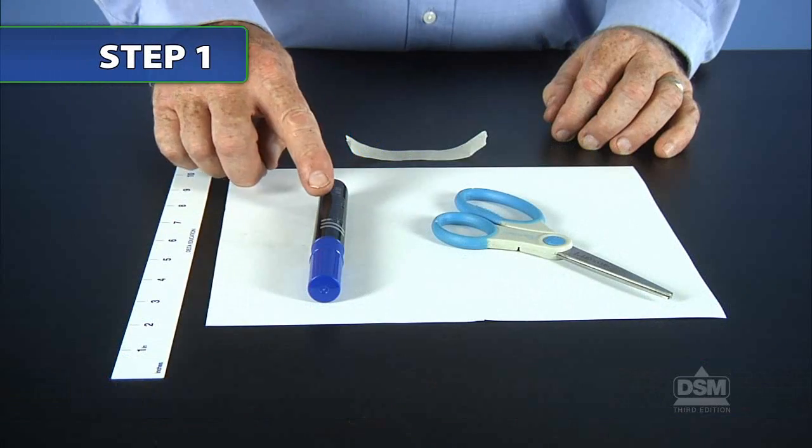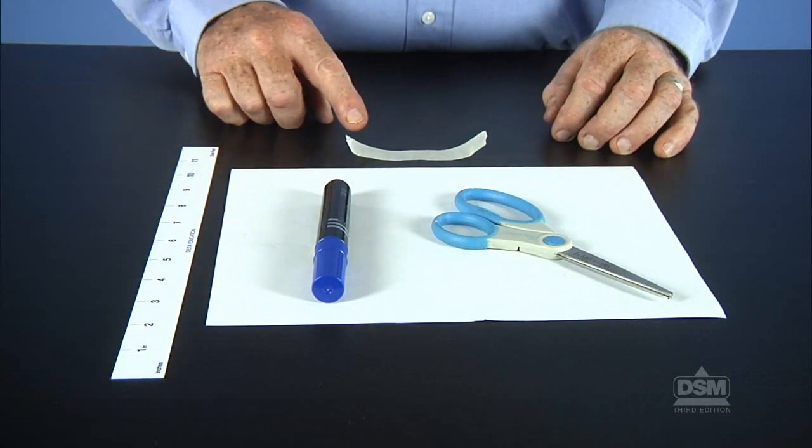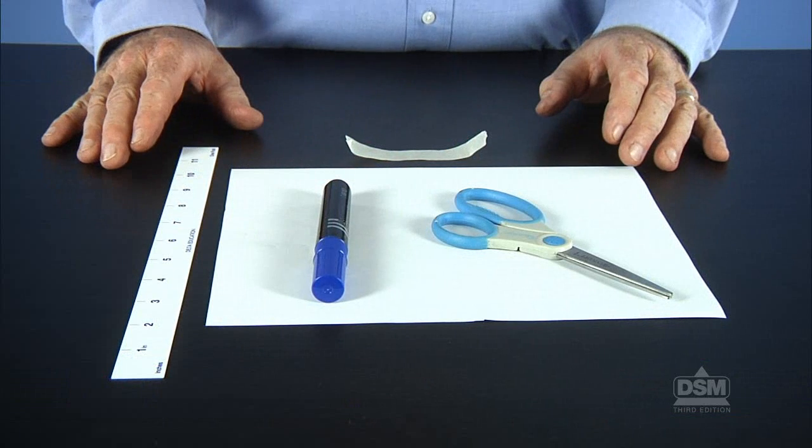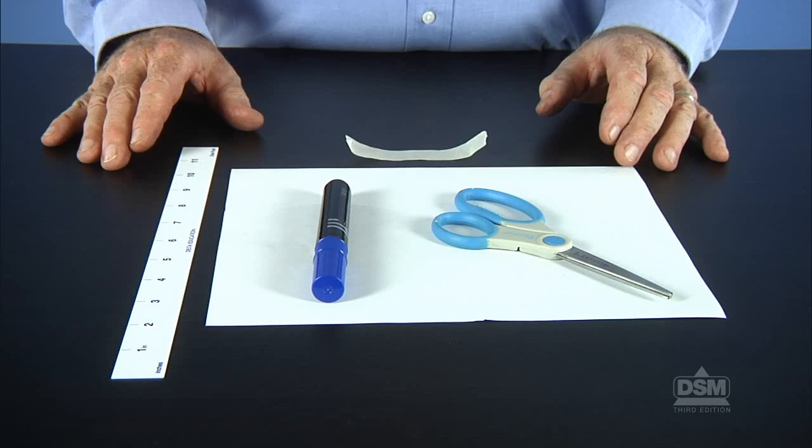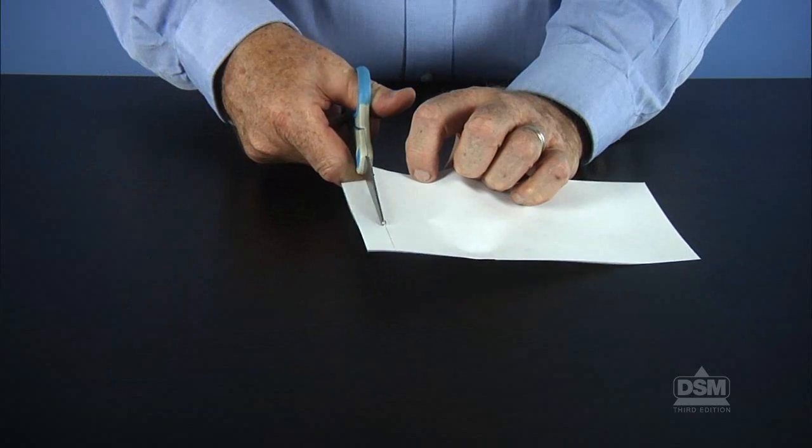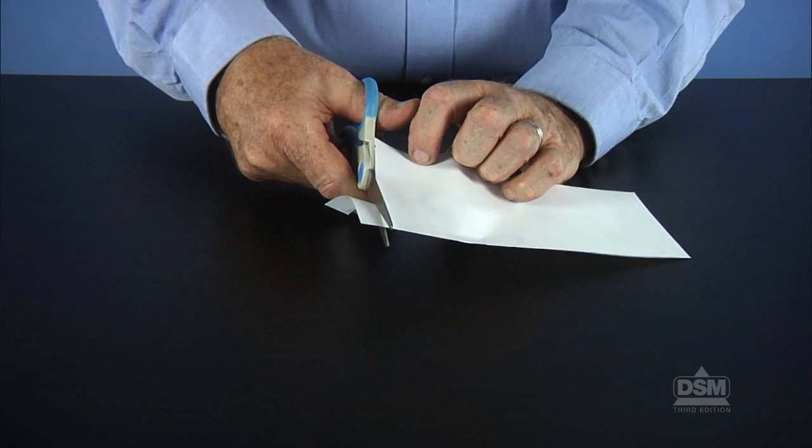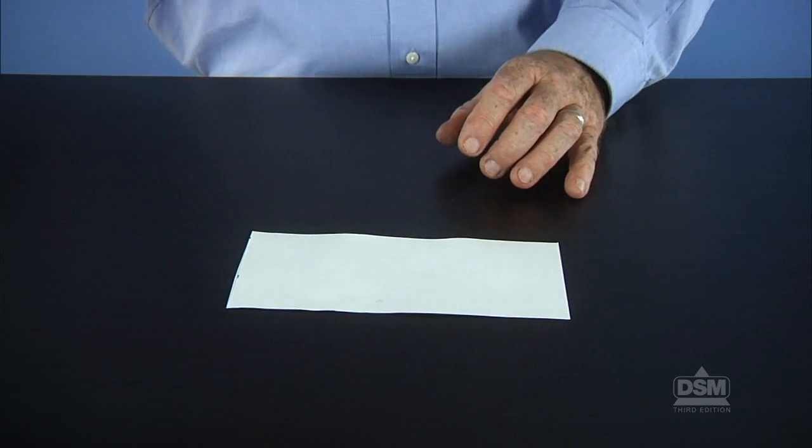To begin the activity, distribute a sheet of paper, a wide felt tip marker, a pair of scissors, a metric ruler, and a piece of tape to each team. Have the students measure and cut the sheet of paper into a rectangle 10 centimeters by 20 centimeters.